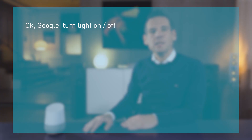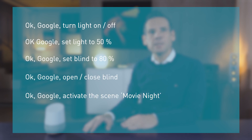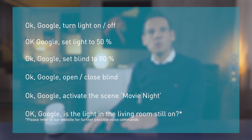At the moment, you can use the following voice commands: 'OK Google, turn light on or off.' 'OK Google, set light to 50%.' 'OK Google, set blind to 80%.' 'OK Google, open blind.' 'OK Google, activate the scene movie night.' 'OK Google, is the light in the living room still on?'